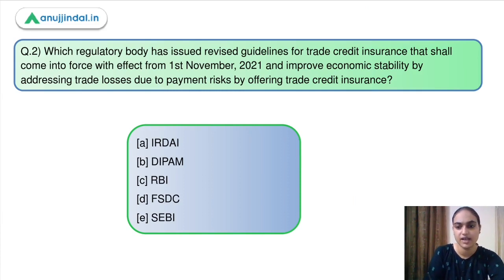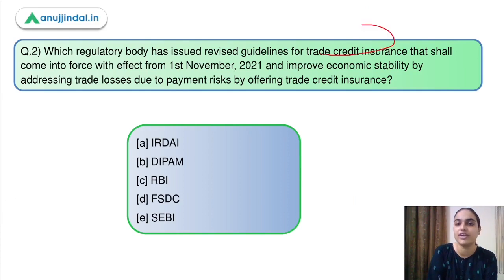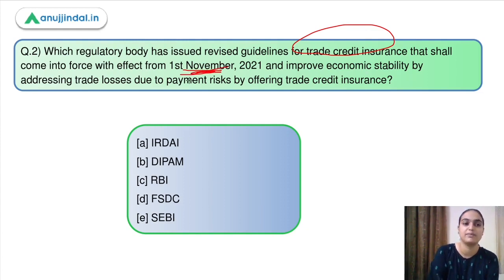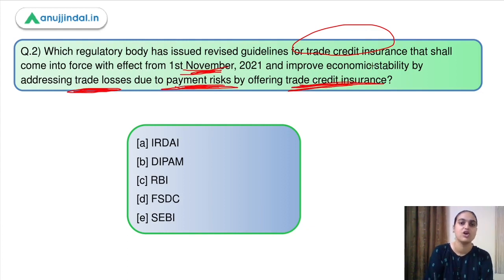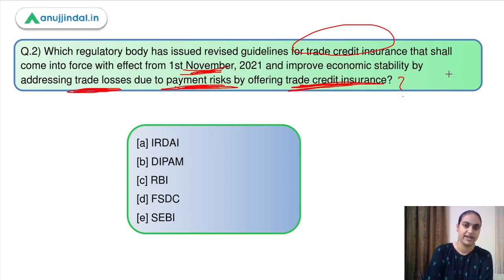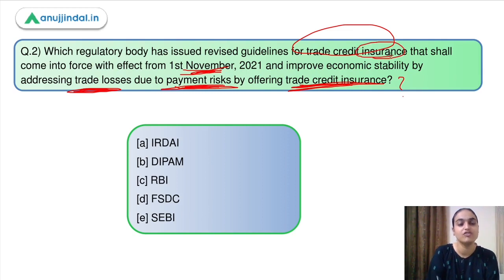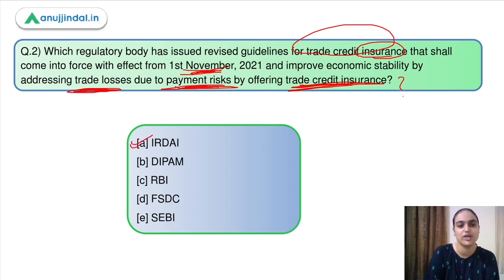Moving on to question number 2: which regulatory body has issued revised guidelines for trade credit insurance that shall come into effect from 1st November 2021, to improve economic stability by addressing trade losses due to payment risks? Since the question is about insurance, the regulatory body is IRDAI. The answer is option A.